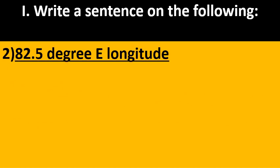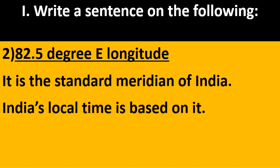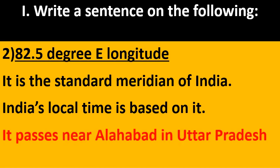The second one is 82.5 degrees East longitude — this is also a most expected one. It is the standard meridian of India. India's local time is based on it. It passes near Prayagraj, formerly called Allahabad, in Uttar Pradesh. This imaginary line passes at 82.5 degrees and India's standard time is based on it.